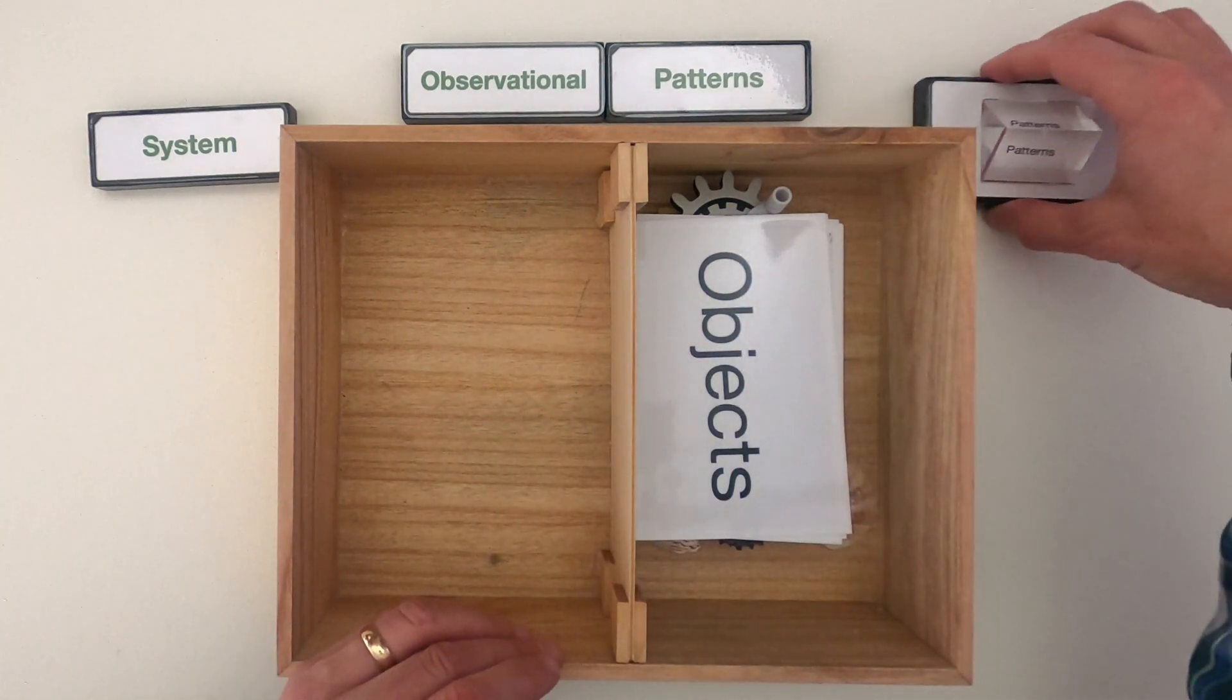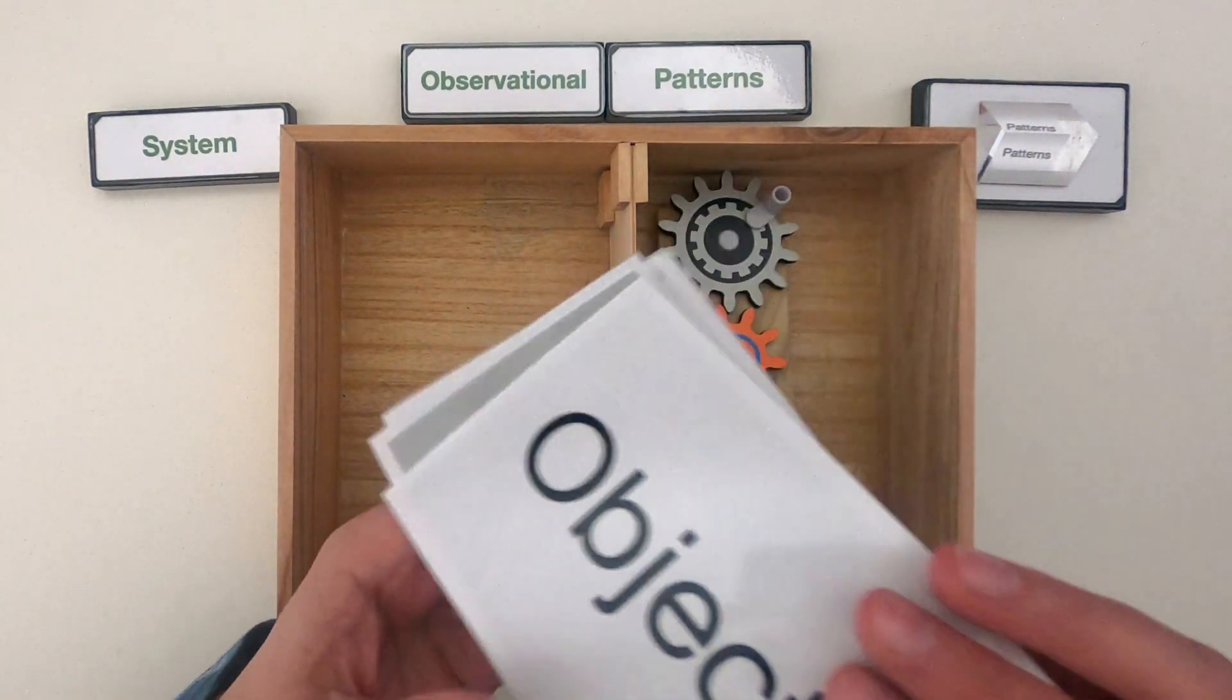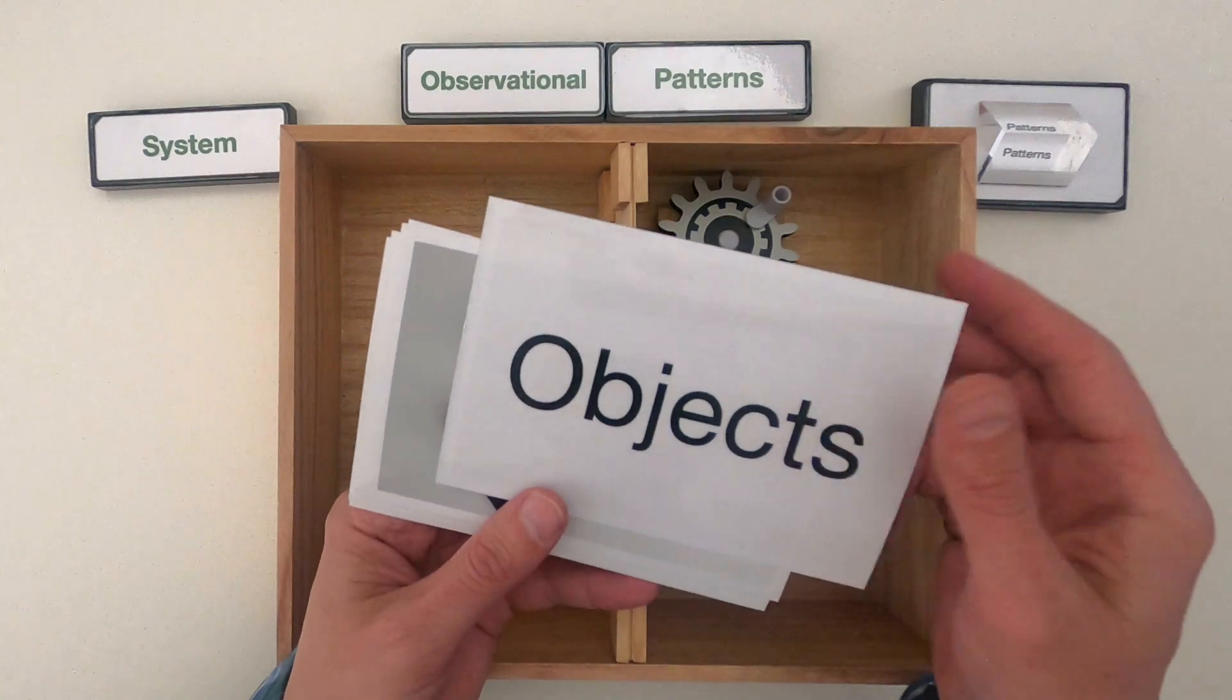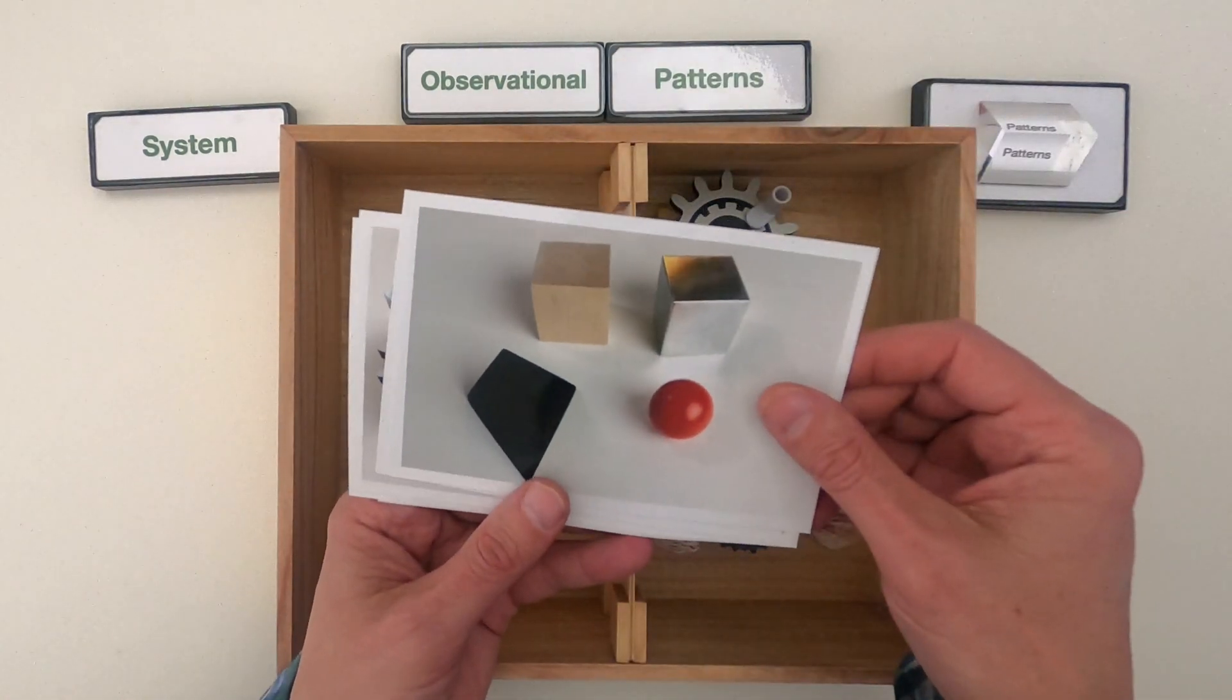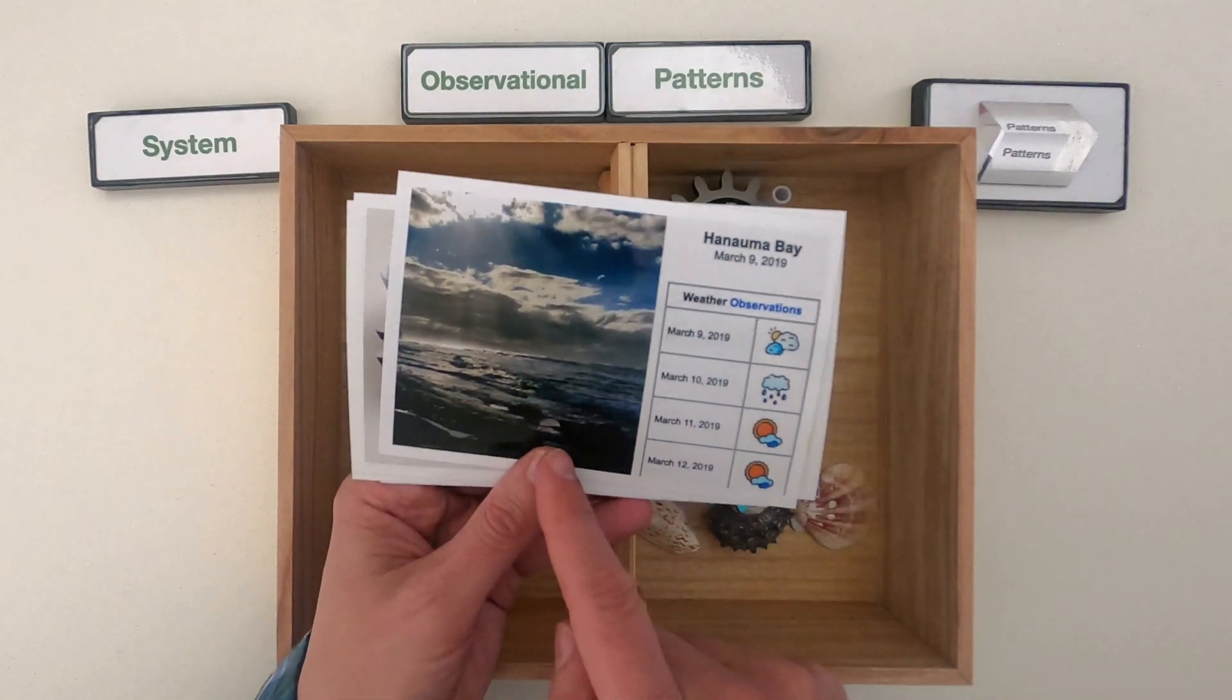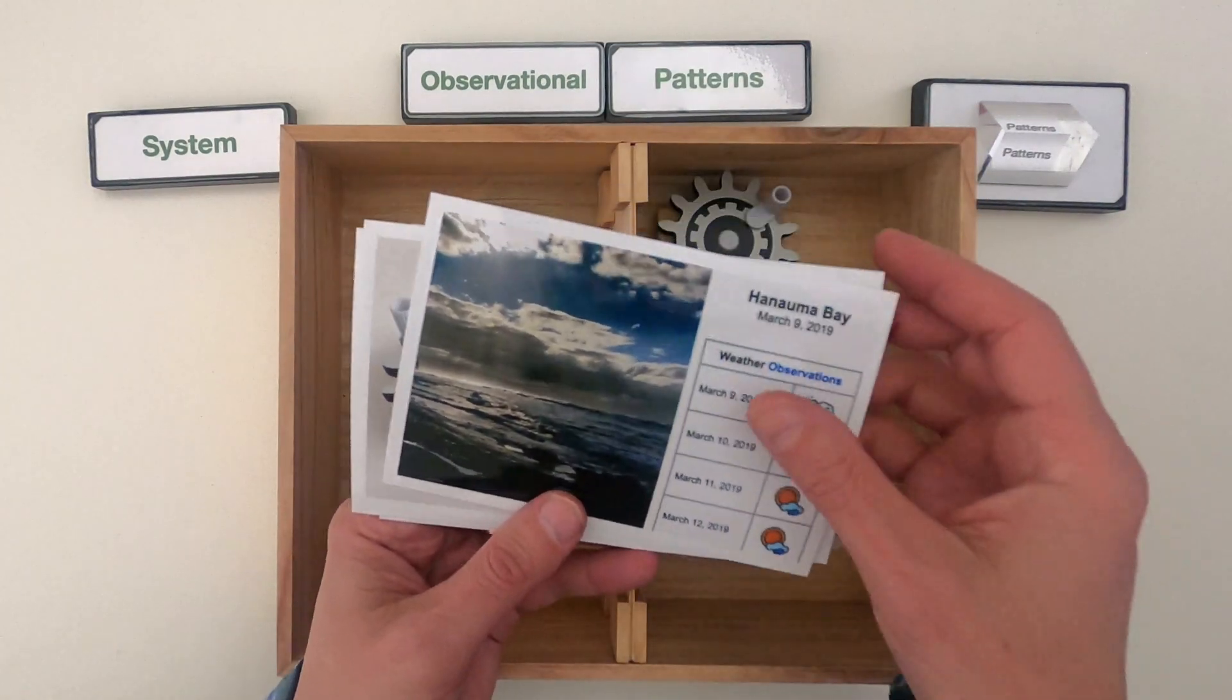By the time you're done watching this video, you should be able to recognize observational patterns in just common day objects, but also in the sky as you look at clouds or in the weather as it changes.